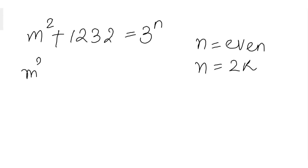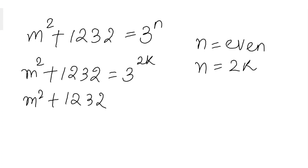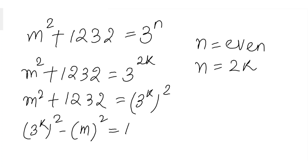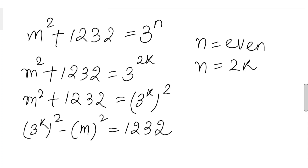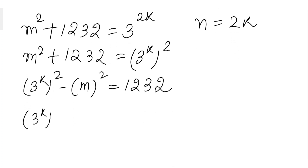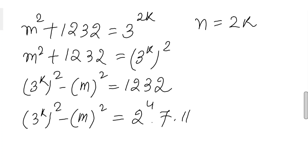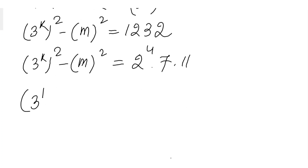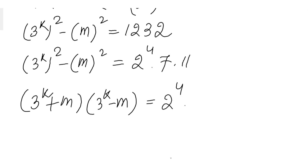Since n = 2k, we have m squared plus 1232 equals 3 to the power 2k, which we can write as m squared plus 1232 equals (3^k) squared. Bringing everything to the right-hand side: (3^k) squared minus m squared equals 1232. We already know 1232 equals 2 to the power 4 times 7 times 11. This is a difference of two squares, so using the factoring formula: (3^k + m)(3^k − m) equals 1232.